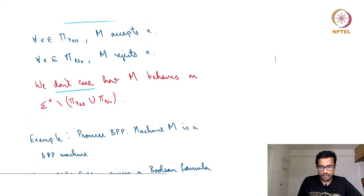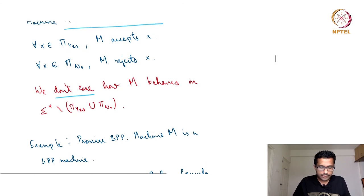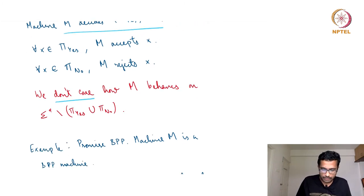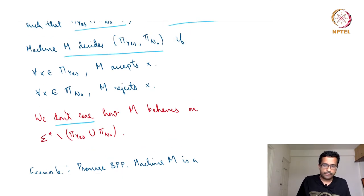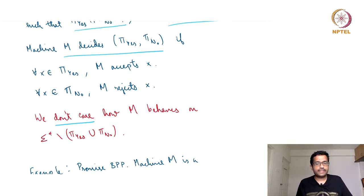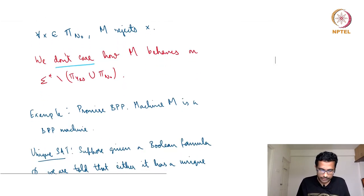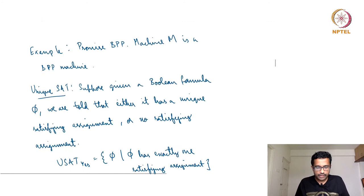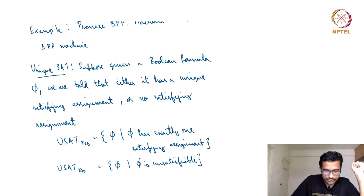So we could define something called promise BPP: the set of those promise problems for which there is a BPP machine that decides it. Similarly you can define promise P, promise NP, and so on. A promise BPP is a promise problem for which all strings in pi_yes are accepted by the BPP machine with probability at least two-thirds, and all strings in pi_no are accepted with probability at most one-third. To give one example, consider the problem Unique SAT, sometimes shortened as USAT.